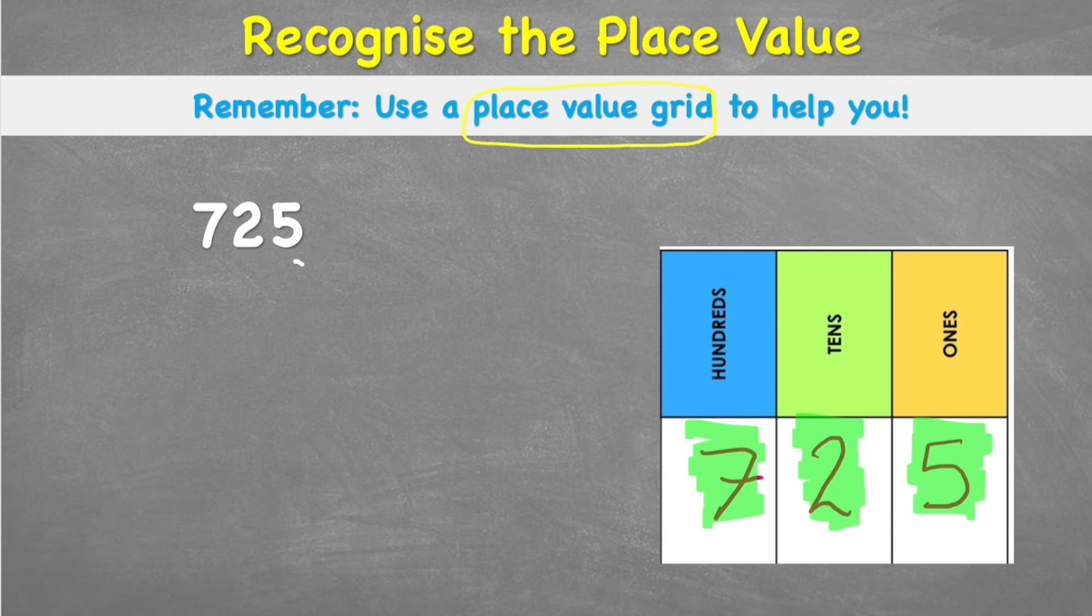So we could say I have 5 ones, 2 tens, which would be 20, and 7 hundreds, which would be 700. So 725 has the same value as saying 700, add 20, add 5.